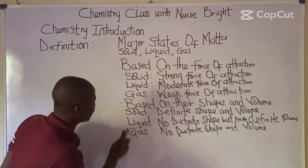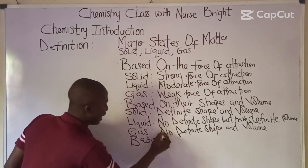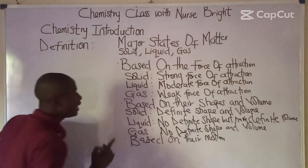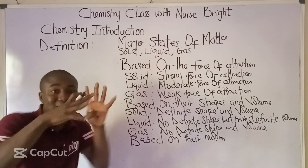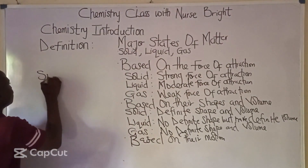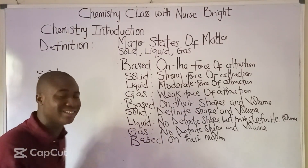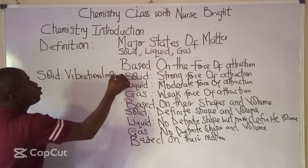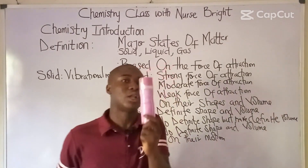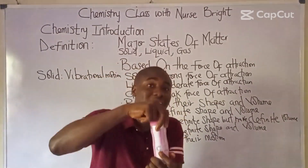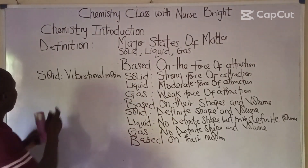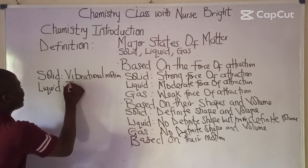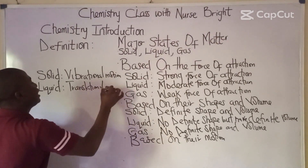The last factor to differentiate between solid, liquid, and gas is based on their type of motion. Solid particles exhibit vibrational motion — they vibrate at a fixed point. Liquids undergo translational motion. For example, when I change the position of this container, you can see the liquid translating to another direction inside the container.